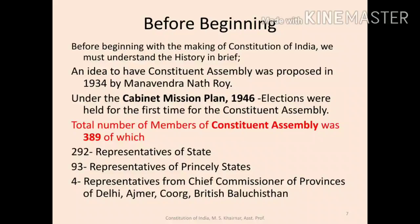For being a democratic and republic nation, it is necessary to have a separate constitution. This is possible by establishing a Constituent Assembly. This idea was thought of and brought by renowned activist Manavendranath Roy. This idea was developed and came through under the Cabinet Mission Plan of 1946. Accordingly, elections were conducted for a 389-member Constituent Assembly.